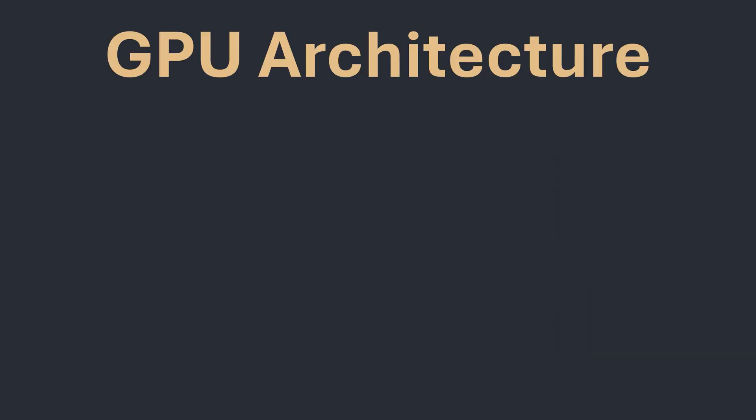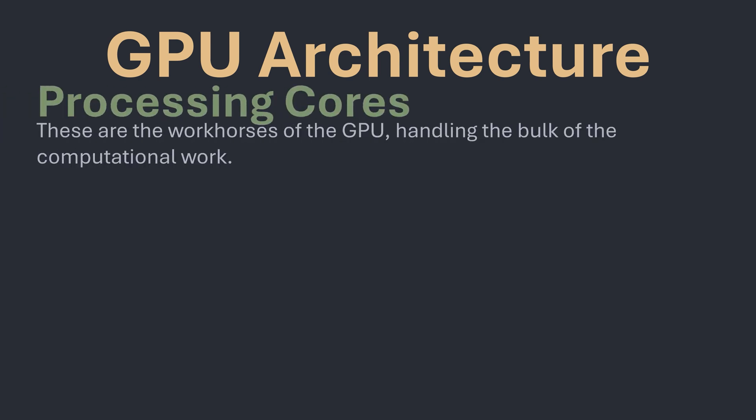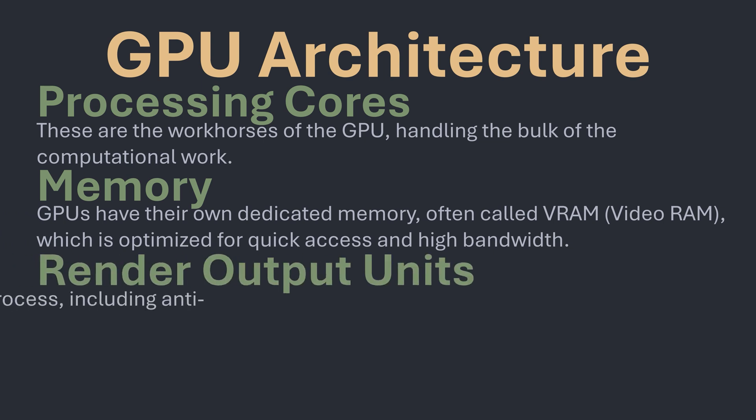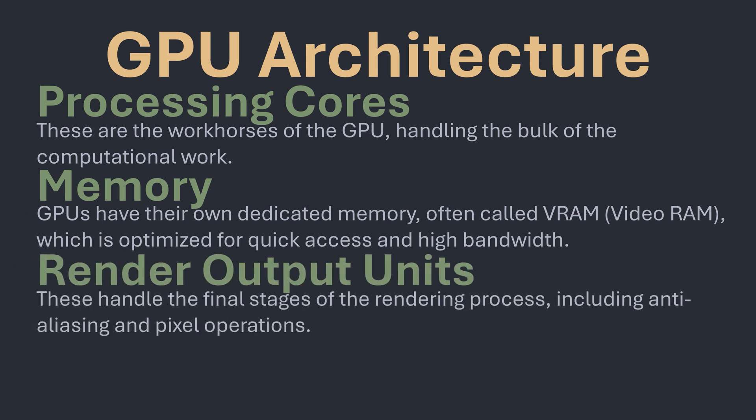Let's break down the key components that make up a typical GPU and have a look at their architecture. Processing cores are the main workhorses of the GPU, handling the bulk of the computational work. GPUs have their own dedicated memory, often called VRAM — which stands for video RAM — optimized for quick access and high bandwidth to support the speed of the GPU. A typical GPU will also contain render output units, which handle the final stages of the rendering process, including anti-aliasing and other pixel operations.